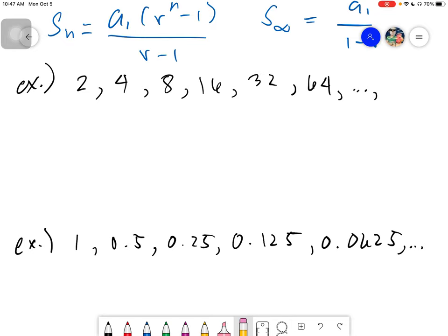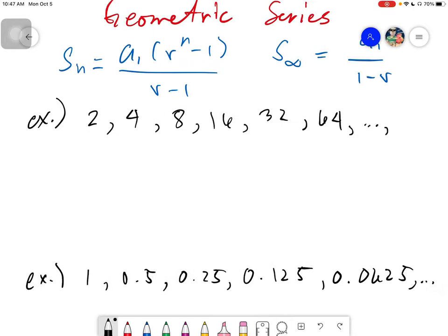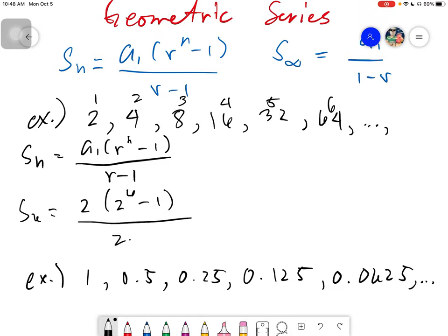So in this case, on this first one, we can only use of course S sub n, which is of course A sub 1 times r raised to n minus 1 all over r minus 1. So this one, you can use it up until whatever the end is. In this case, this is the first, second, third, fourth, fifth, and sixth. Right? We can only add up until S sub 6. So we will have our A sub 1 is 2 times, our r here is positive 2. It's times 2. So this would be 2 raised to 6 minus 1 all over 2 minus 1.